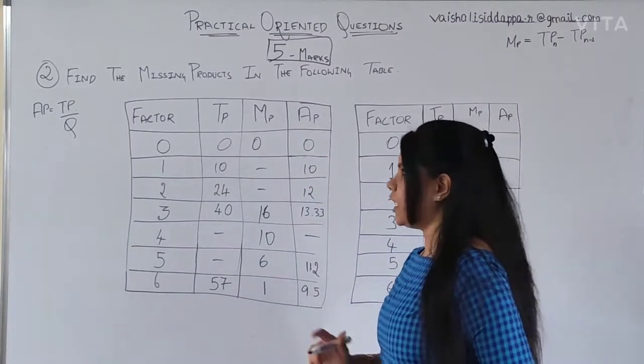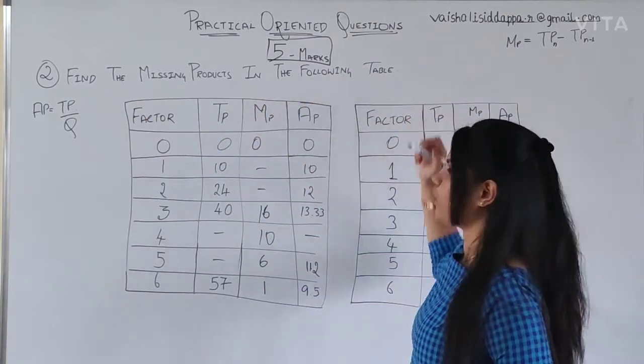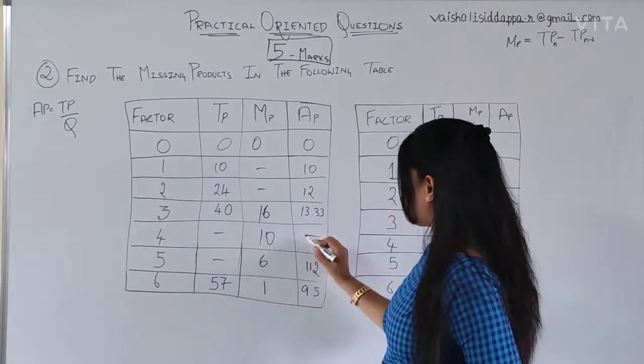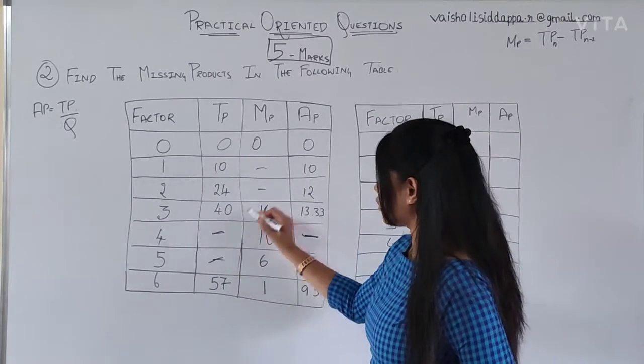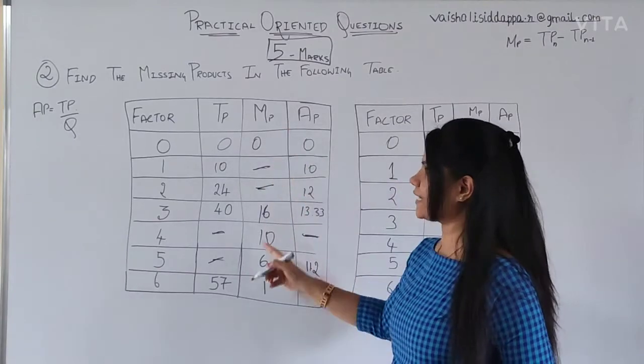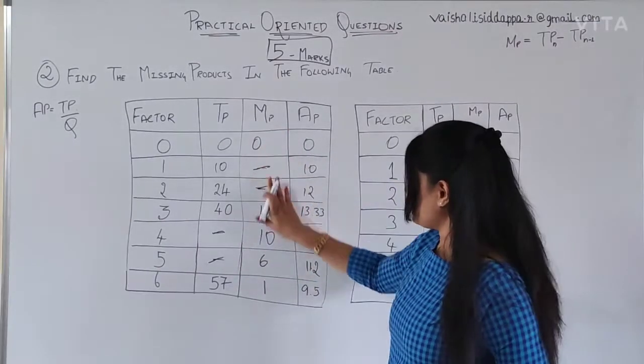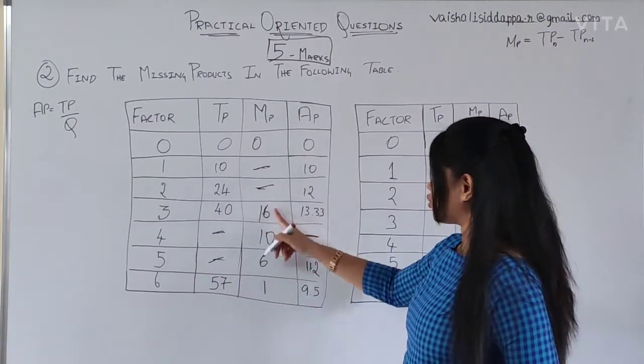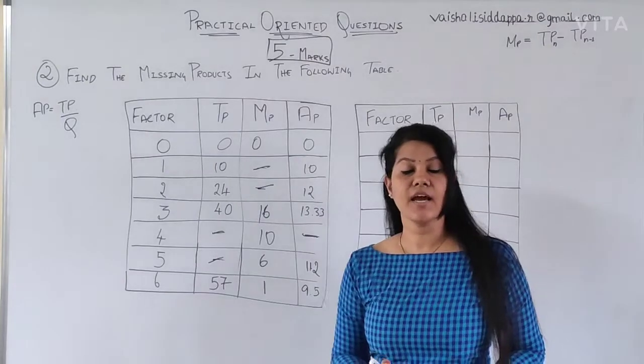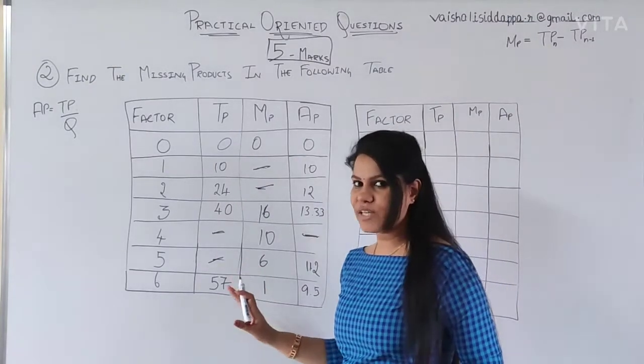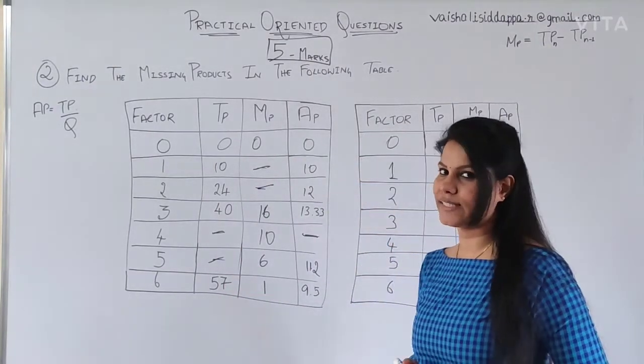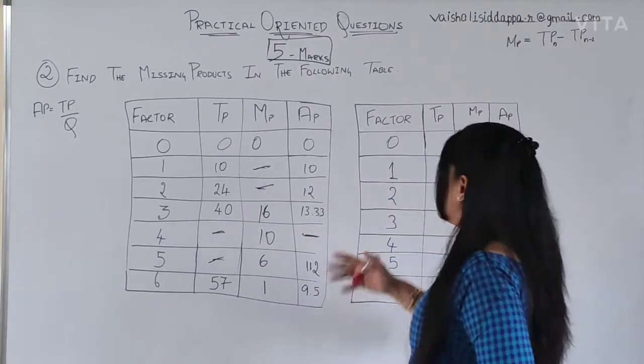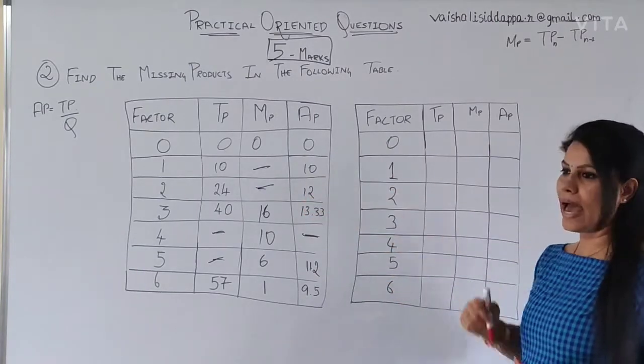The first question here, find the missing products in the following table. You can see here, the blanks, you have to find out what exactly the numbers, what exactly the answer you are supposed to write there. If you are going to fill this, you will get 1 mark each. You have 5 blanks, so for that you will be getting 5 marks. Isn't it easy? So let me tell you how you are going to find out what exactly the missing concepts are. I have came with the same table, which you have here.